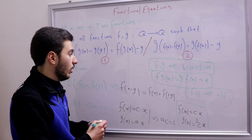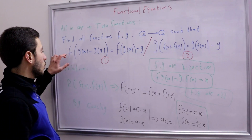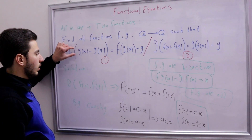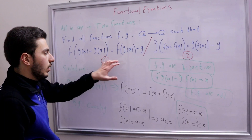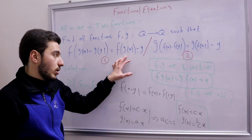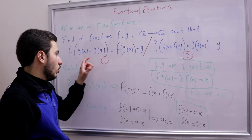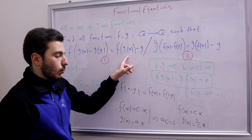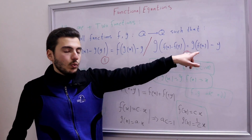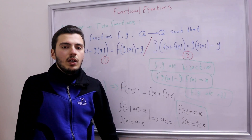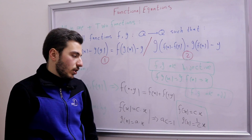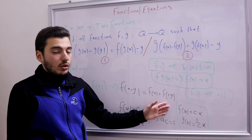Let's verify: substituting into the first equation, c · (1/c)(x − y) = x − y and c · (1/c) = 1, so we get x − y = x − y. The same holds for the second equation by symmetry. So f(x) = cx and g(x) = x/c is indeed the complete solution.